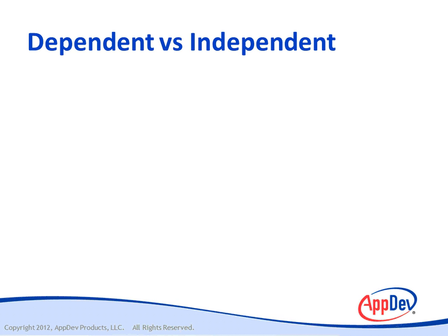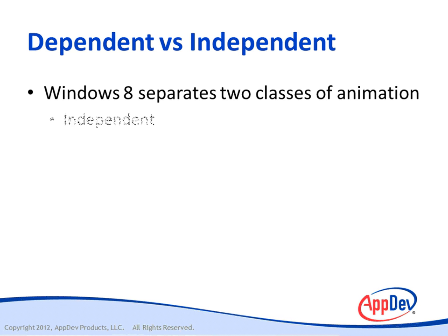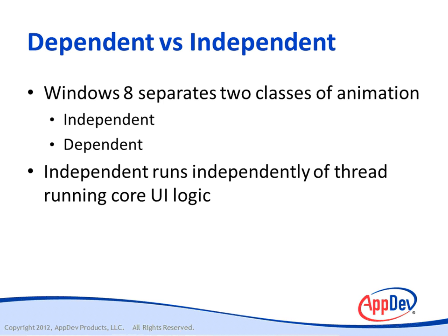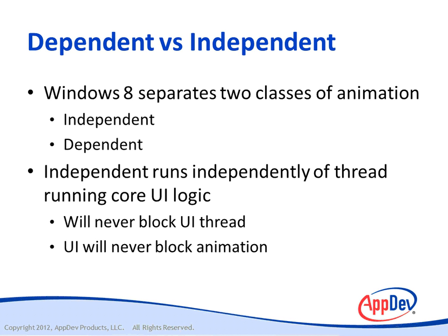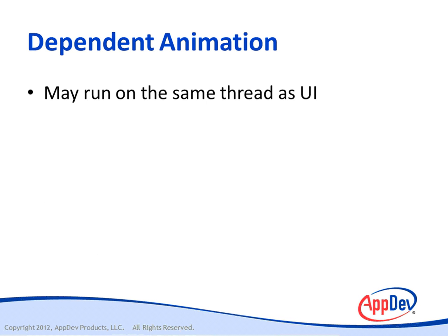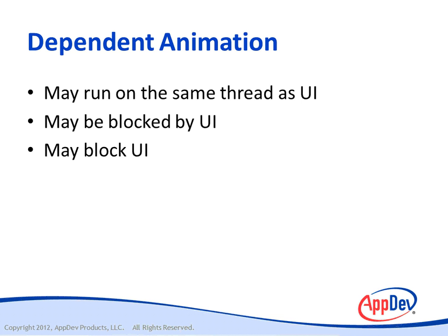Before we go any farther, it's important to understand that Windows 8 separates its animations into two different classes. There are independent animations and dependent animations. Independent animations run independently of the thread that's running the core UI logic. Therefore, independent animations will never block the UI thread and the UI will never block the animation, so you'll get a good experience with an independent animation because it runs in its own thread. On the other hand, dependent animations may run in the same thread as the UI and may be blocked by the UI, and of course they may block the UI.